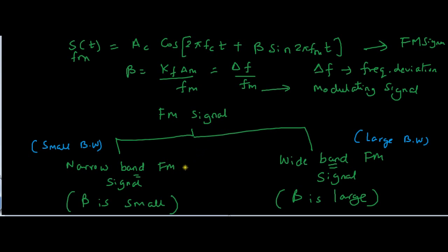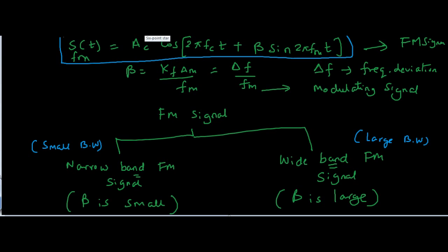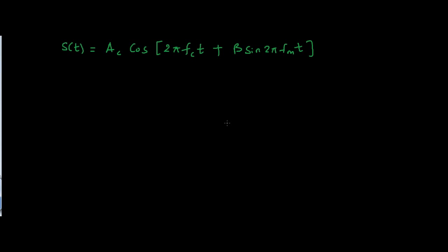Our objective in this video is to find the time domain representation of narrow band FM signal. We need to apply some trigonometric identities to arrive at the final result. We start with s(t) = Ac cos(2π fc t + β sin(2π fm t)) and use the identity cos(a + b) = cos(a)cos(b) − sin(a)sin(b).